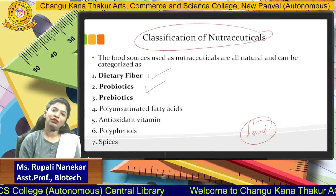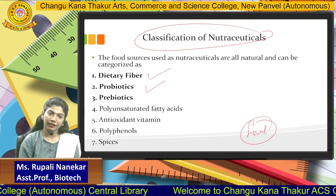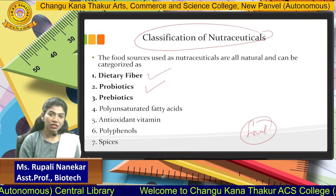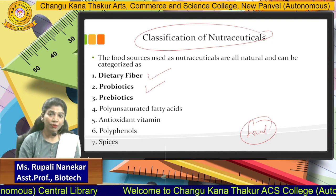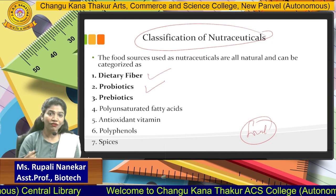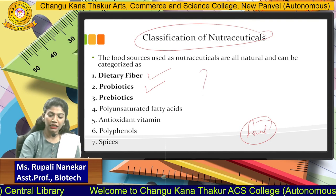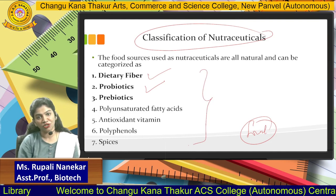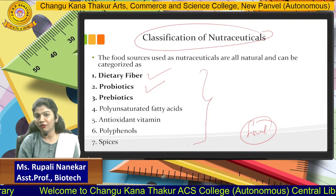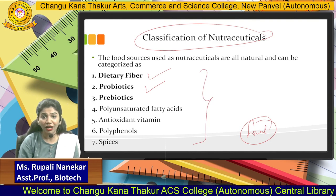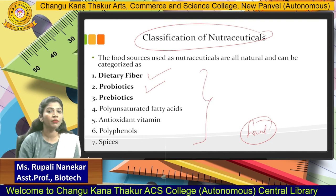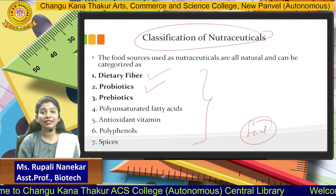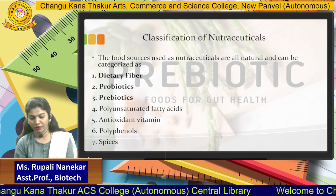In the last two sessions we have seen the classification of nutraceuticals covering dietary fibers and probiotics. Today our topic is prebiotics. Classification of nutraceuticals based upon their natural forming is done in seven different types. We have already covered dietary fibers and probiotics, so now let's see what prebiotics are.